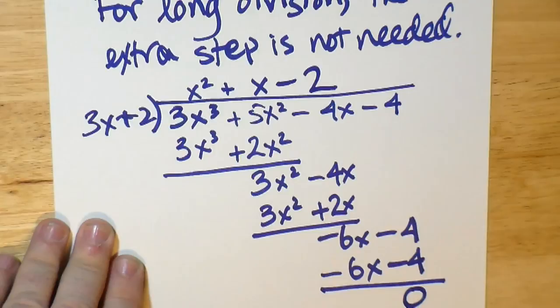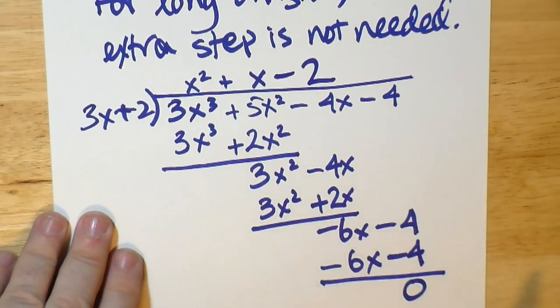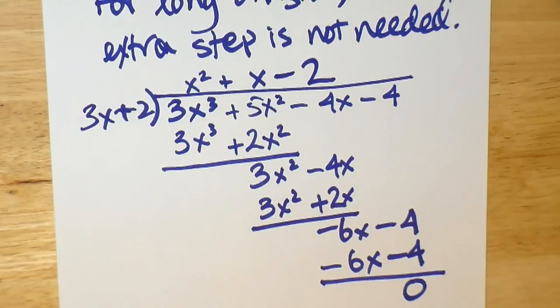So by long division, we see that without adjustment, we already got our factor 3x plus 2. And we only need to factor the quadratic up top.